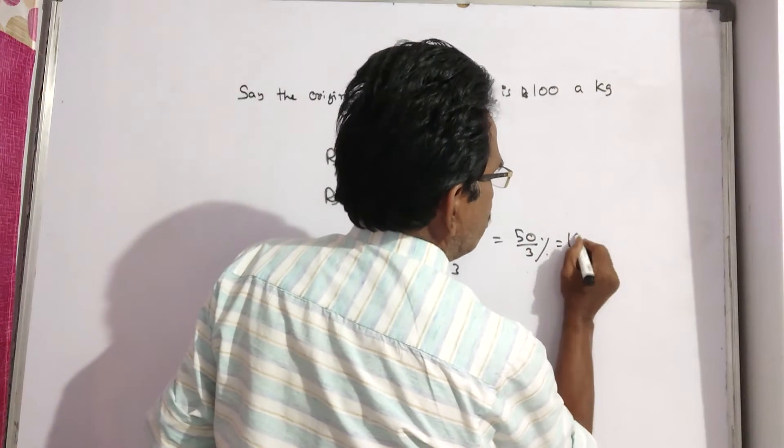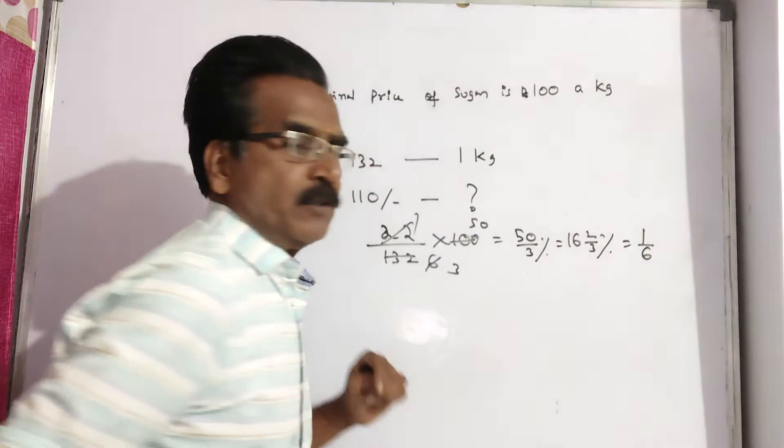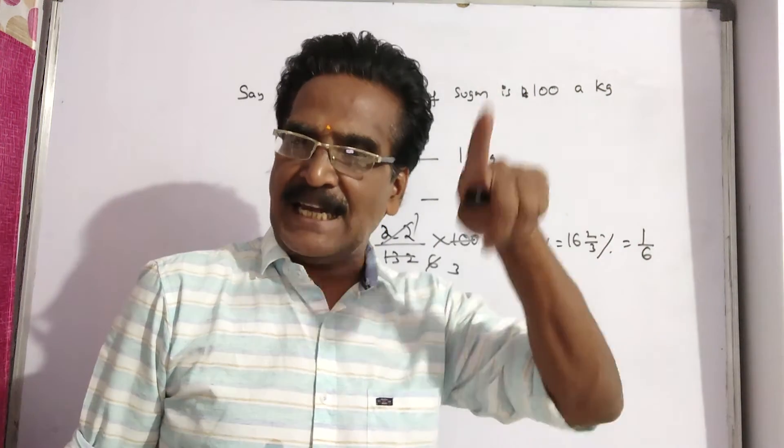50 by 3 percent means 16 and 2 by 3 percent. 16 and 2 by 3 percent means 1 by 6. So they have to reduce the consumption by 1 by 6 of the earlier consumption.